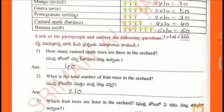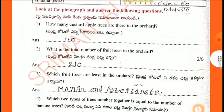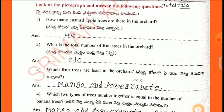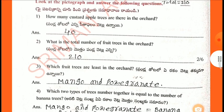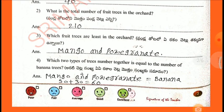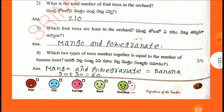Look at the pictograph and answer the following questions. First: How many custard apple trees are there in the orchard? 40. Second: What is the total number of fruit trees in the orchard? 210. Third: Which fruit trees are less in the orchard? Mango and pomegranate. Fourth: Which two types of trees together equal the number of banana trees? Mango and pomegranate equal banana — mangoes 30, pomegranate 30, equals 60, same as banana.